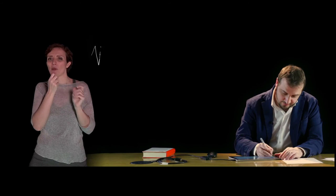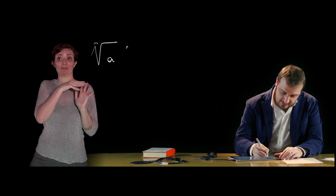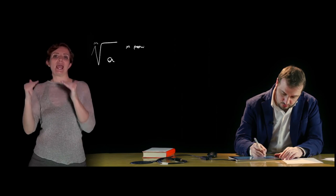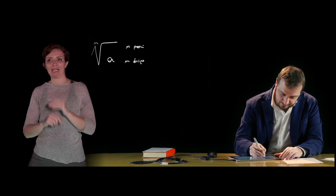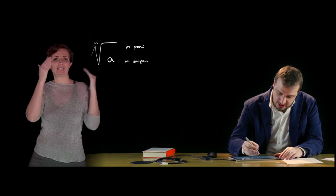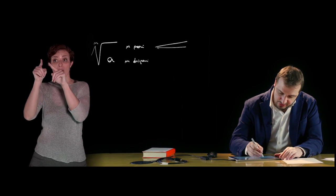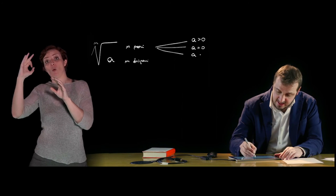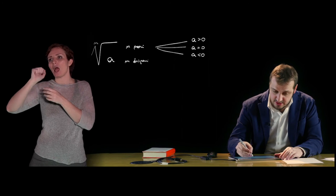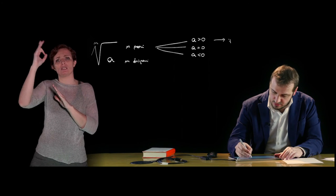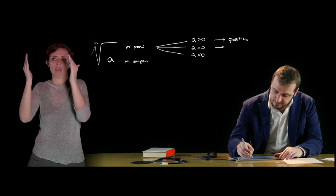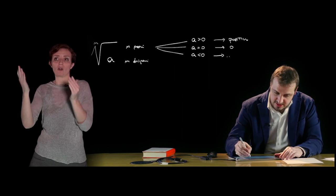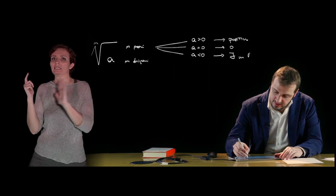We defined all these properties in R₀⁺; generalizing to ℝ, they still hold with some important caveats. For the nth root of a with n even: if a > 0, the result is a real positive number; if a = 0, the result is 0; and if a < 0, the radical does not exist in ℝ.